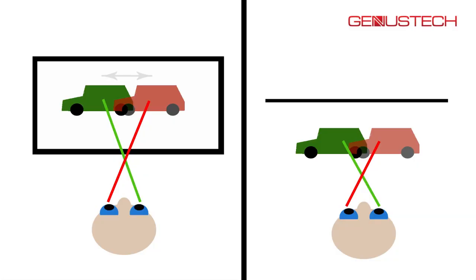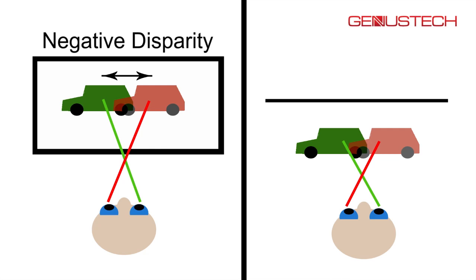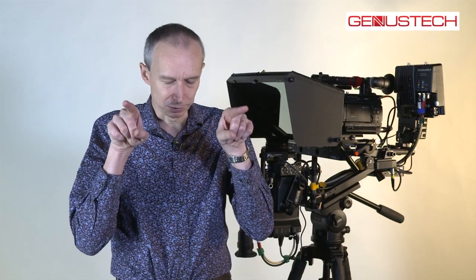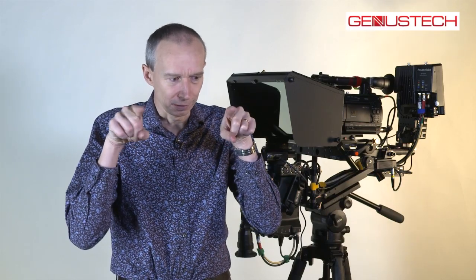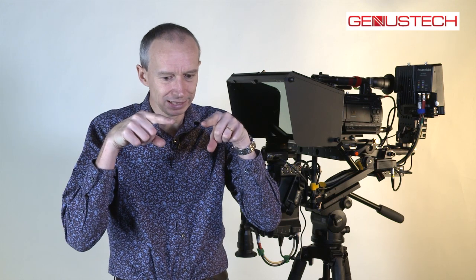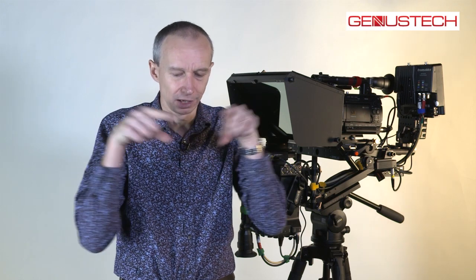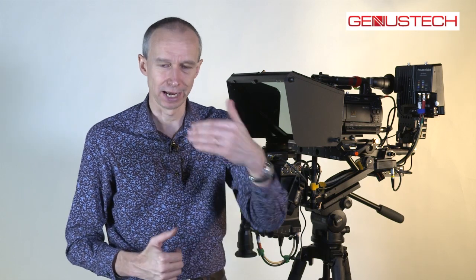Similarly, any objects appearing in the foreground or in front of the screen are said to have negative disparity. Why is it negative? It's because your eyes are toeing in or angling in — it's a negative angle. So: negative in front of the screen, positive behind the screen, and the difference between the left and right images is known as the disparity.